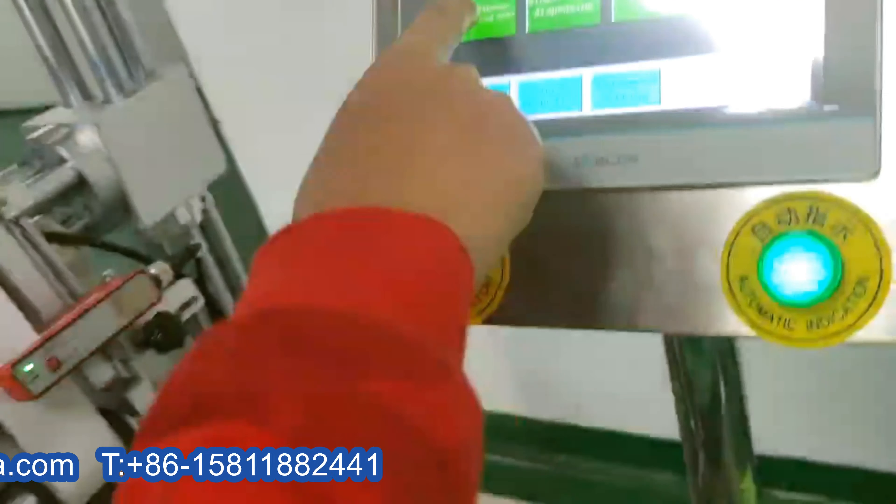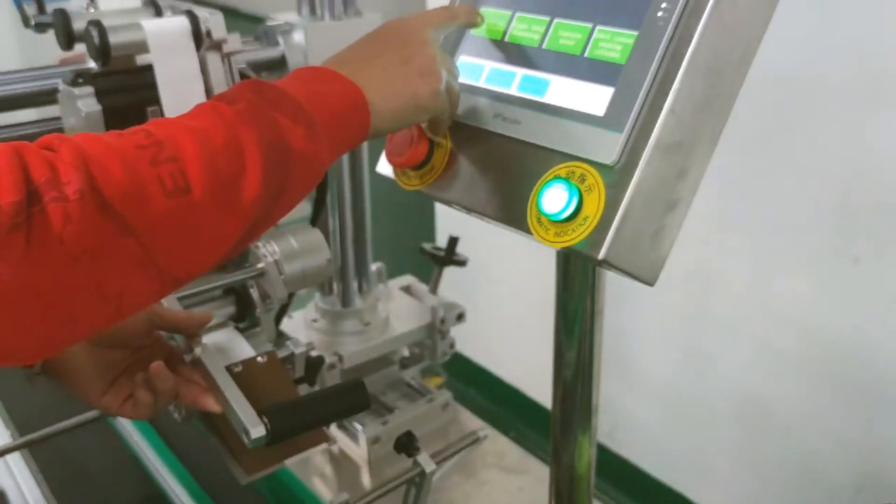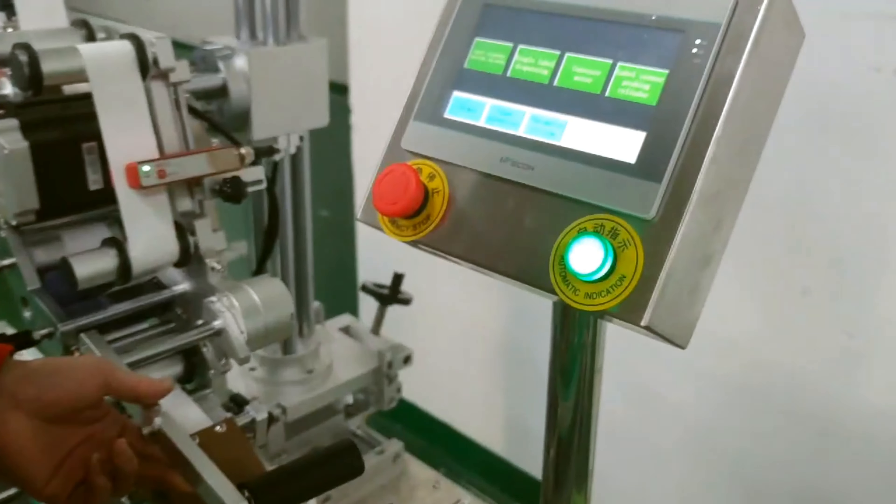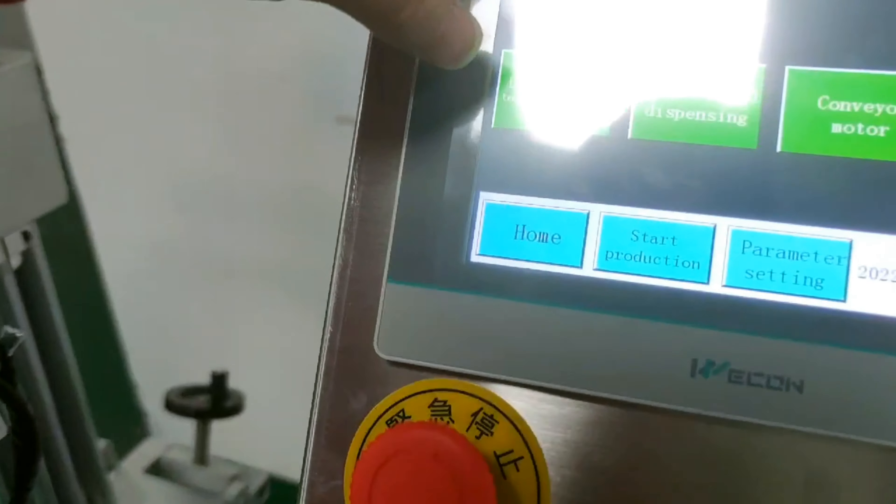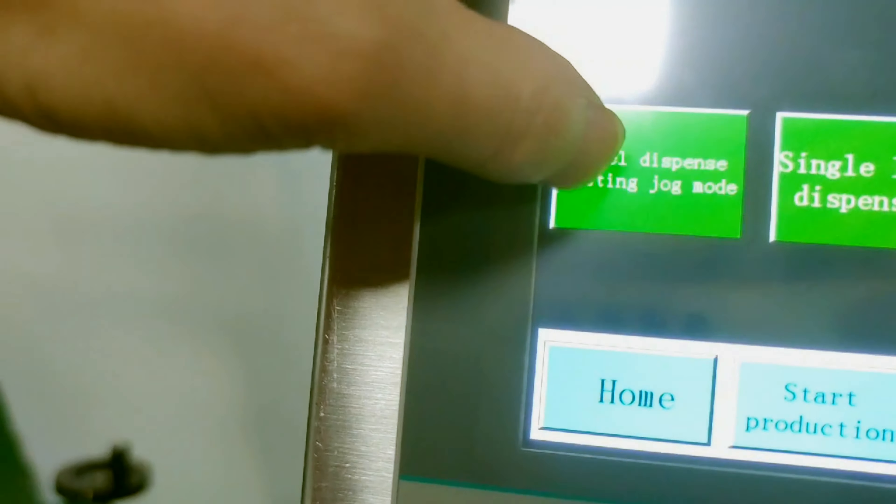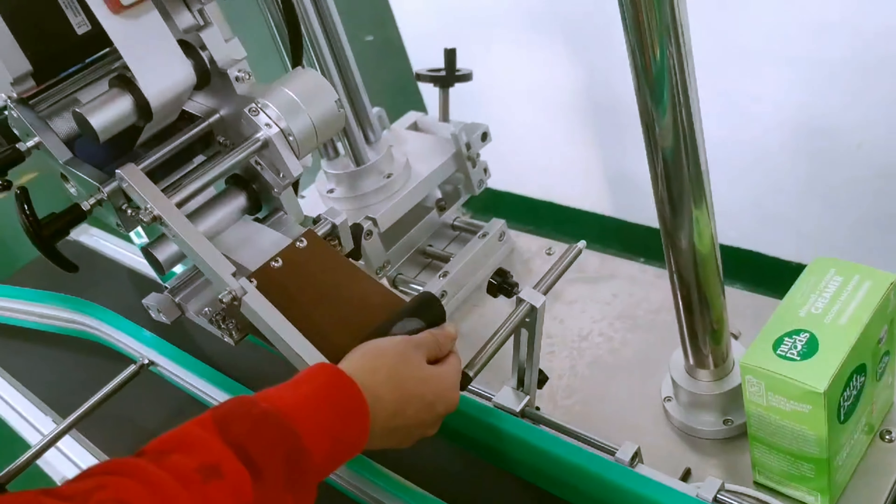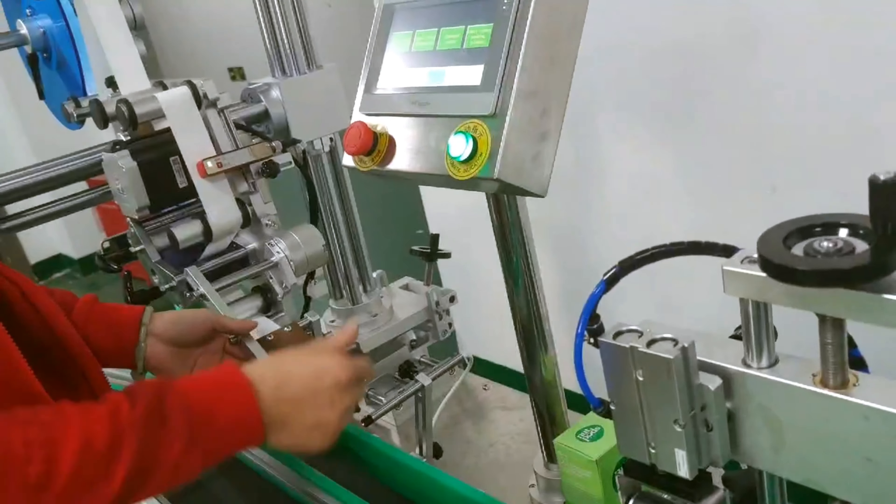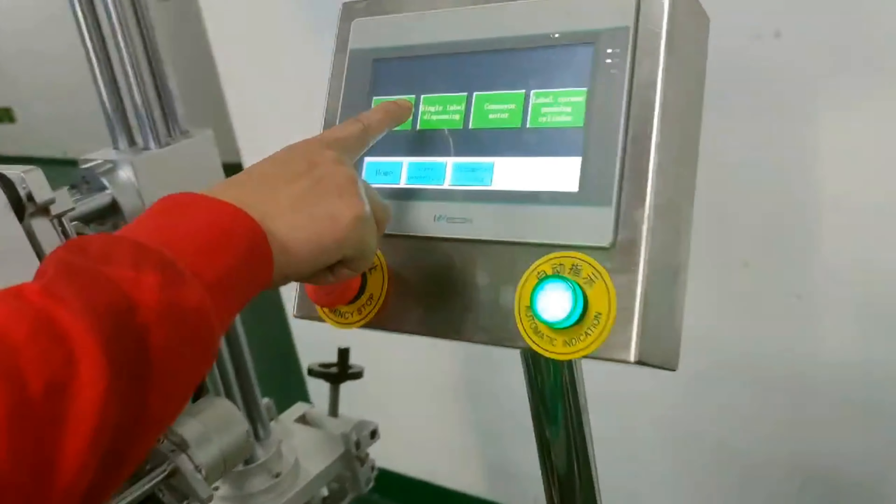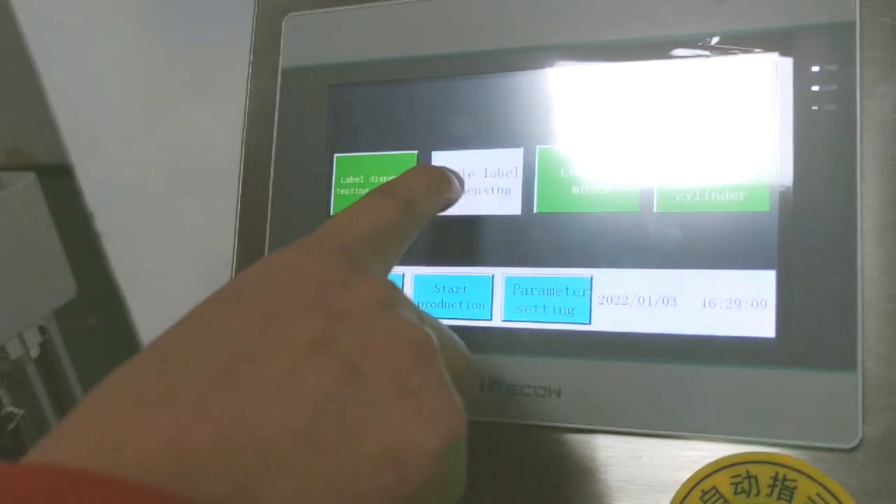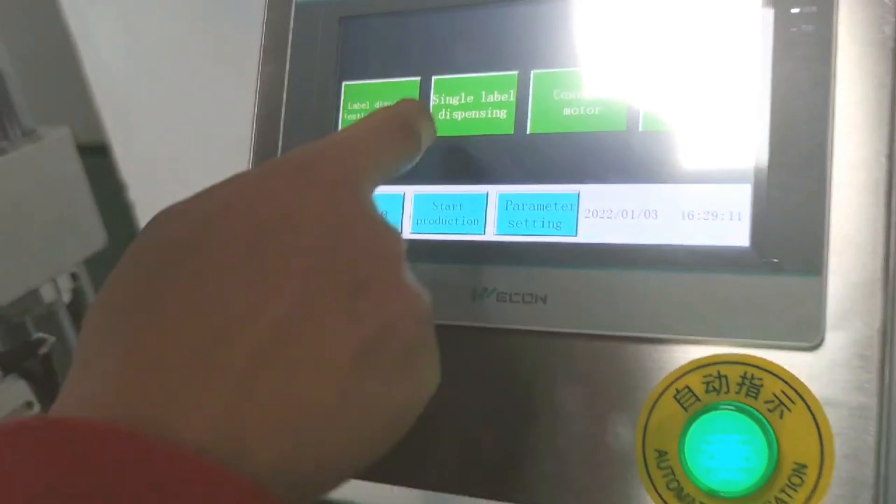Click Label Dispense Testing Job Mode to make out labels by hand. Later, click Single Label Dispensing.